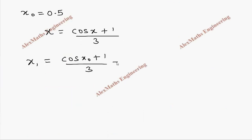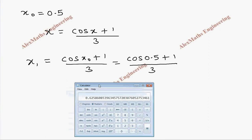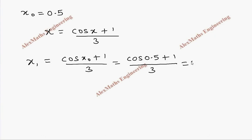Now x1 = (cos x0 + 1) / 3 = (cos 0.5 + 1) / 3. Using the calculator: 0.5, cos value, then plus 1, then divided by 3. We get 0.62586, stopping at 5 decimal places.